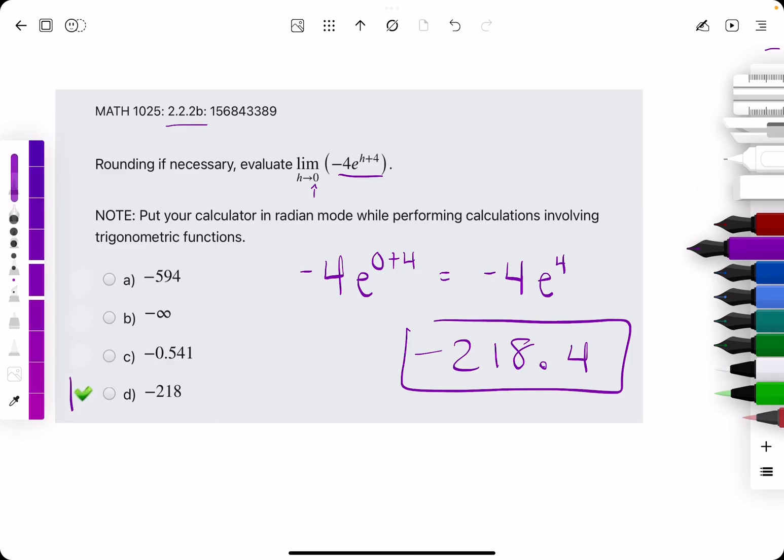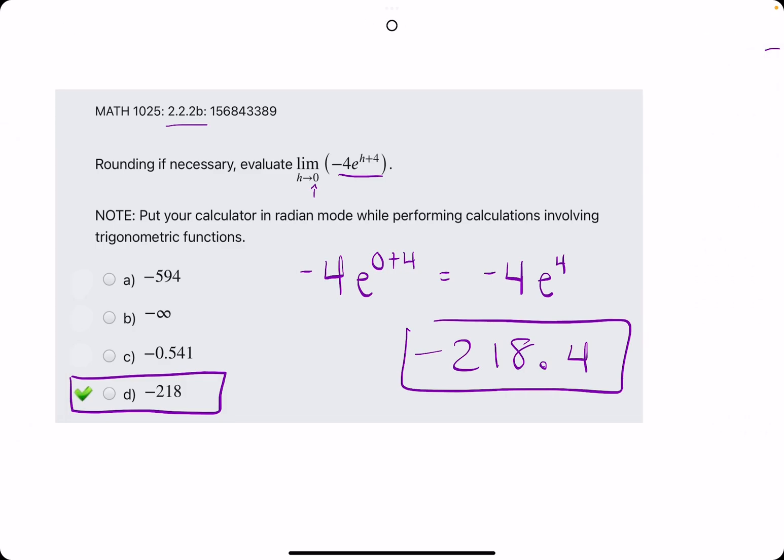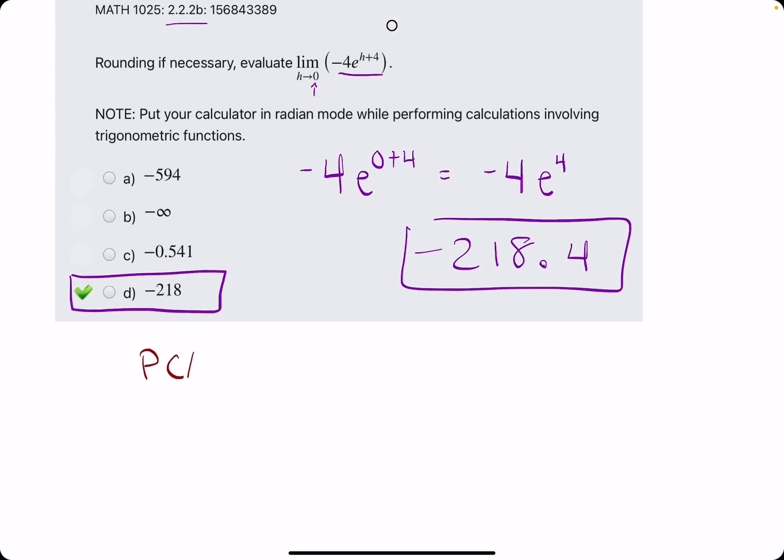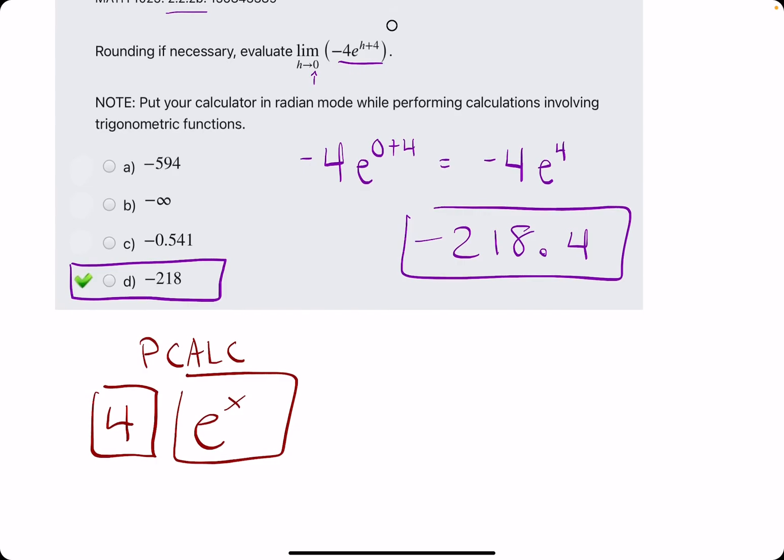So D is our answer here. It's simply a plug and chug type of problem. If you have any questions about P Calc, how you would plug this into P Calc is you would likely type in the number four first, and then you'll hit hopefully some e to the x button that exists. So you'll do it kind of in an opposite order. You'll hit four, then e to the x, then I would probably just multiply that by another negative four. That's P Calc.